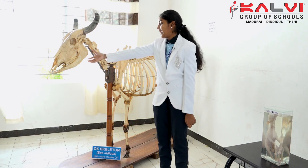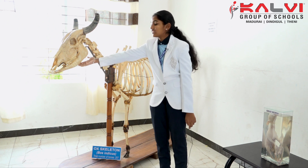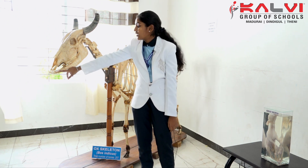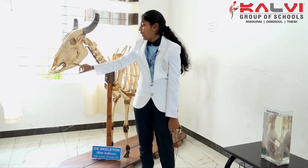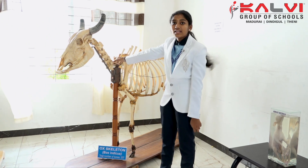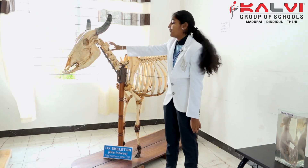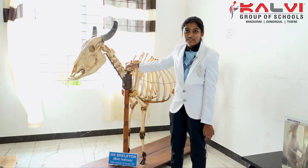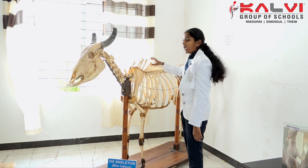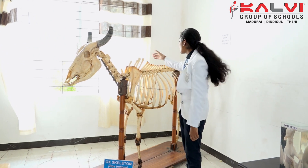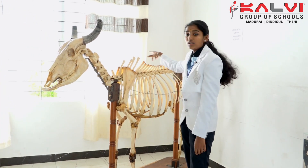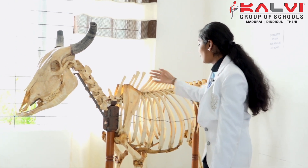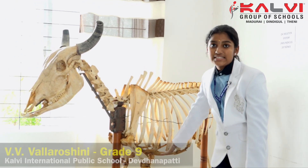I am going to explain about the head region. This is the mandible and its teeth region — incisors, canine, molar, and premolar. And this is the neck region. Cervical vertebra C1 to C7, connected to the thoracic vertebra T1 to T13, which is connected to the ribs, and both are connected with the sternum.